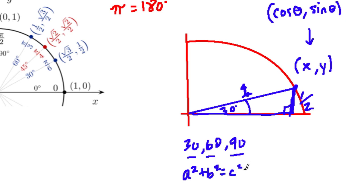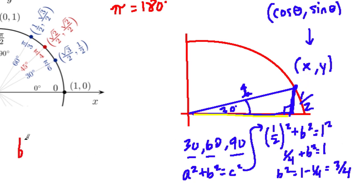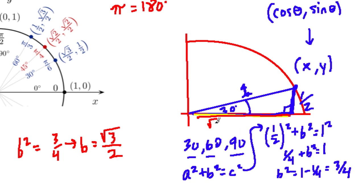To find the other missing side, we use the Pythagorean theorem: a squared plus b squared equals c squared. One leg is 1 half, so 1 half squared plus b squared equals 1 squared. 1 squared is 1, and 1 half squared is 1 fourth. So b squared equals 1 minus 1 fourth, which is 3 fourths. We want b, so b equals the square root of 3 over the square root of 4, which is 2. That's our x value: square root of 3 over 2. And our y value is 1 half — which is exactly the point shown: root 3 over 2, 1 half, for 30 degrees.